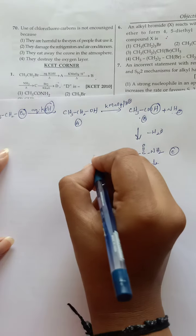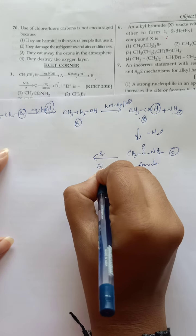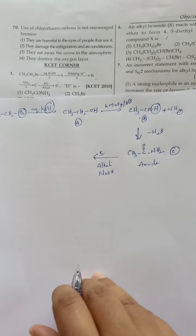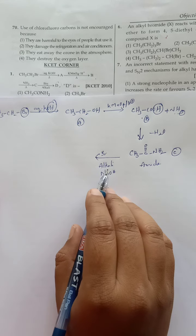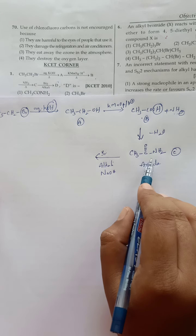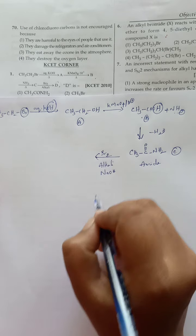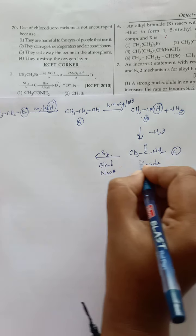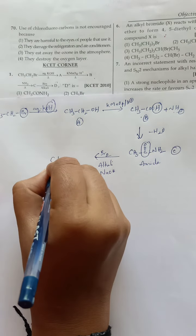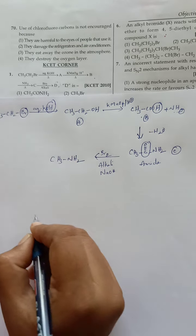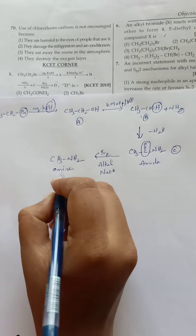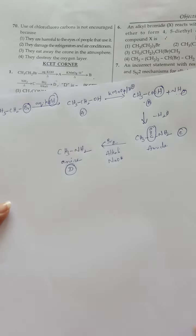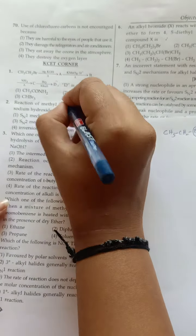Now C reacts with bromine in alkali — alkali meaning NaOH or KOH. This is the Hoffmann bromamide degradation reaction. Whenever amide reacts with bromine in the presence of alkali, degradation takes place: the CO group is eliminated and we get CH3NH2 as the final product — that is an amine, and this is D. So D is the amine CH3NH2, and the answer is the fourth option.